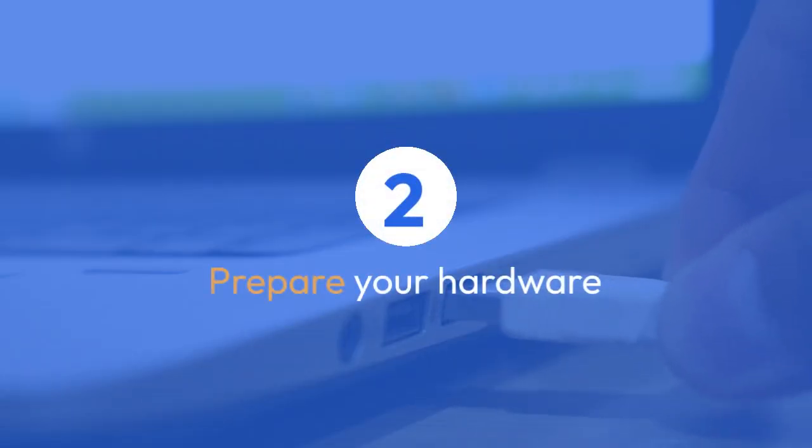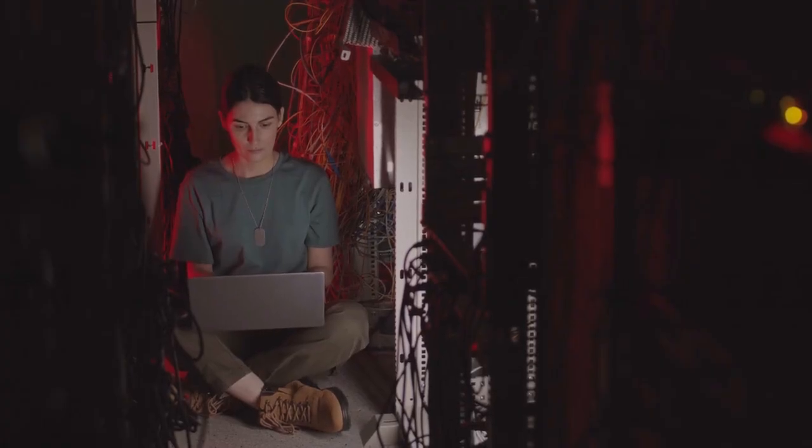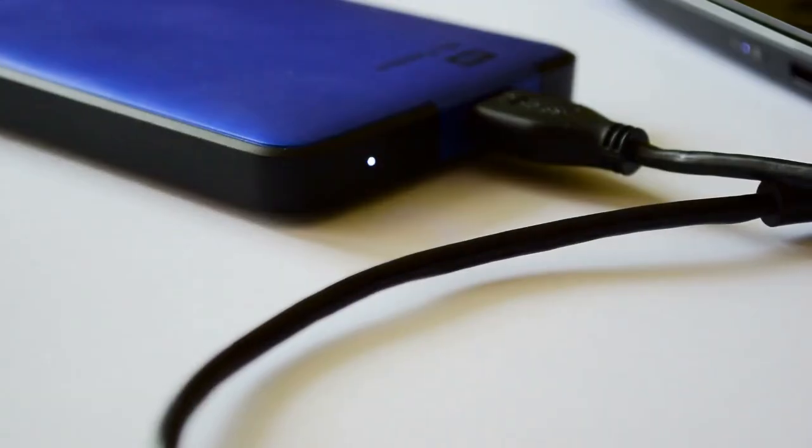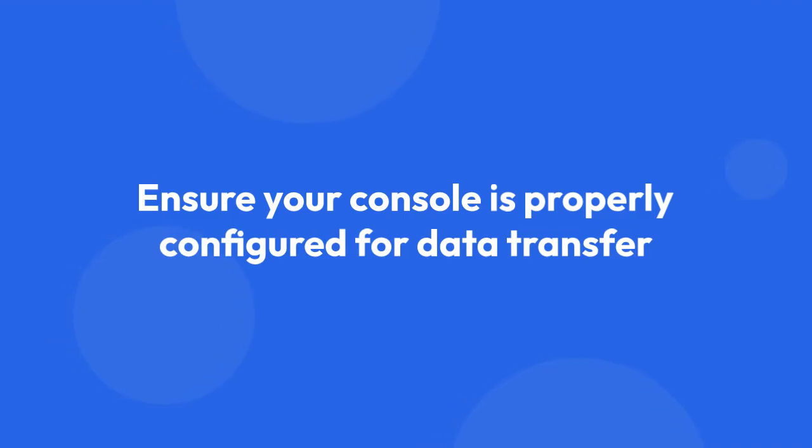Step 2: Prepare your hardware. Connect your original game cartridge or disk to your computer using the appropriate hardware. This might involve a USB adapter for your console's game cards or a disk drive for optical media. Ensure your console is properly configured for data transfer and carefully follow any instructions provided by the chosen software.